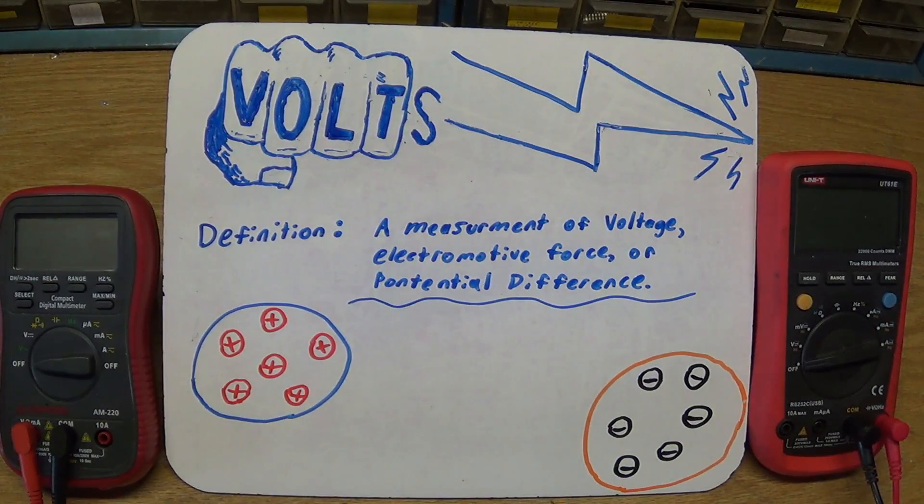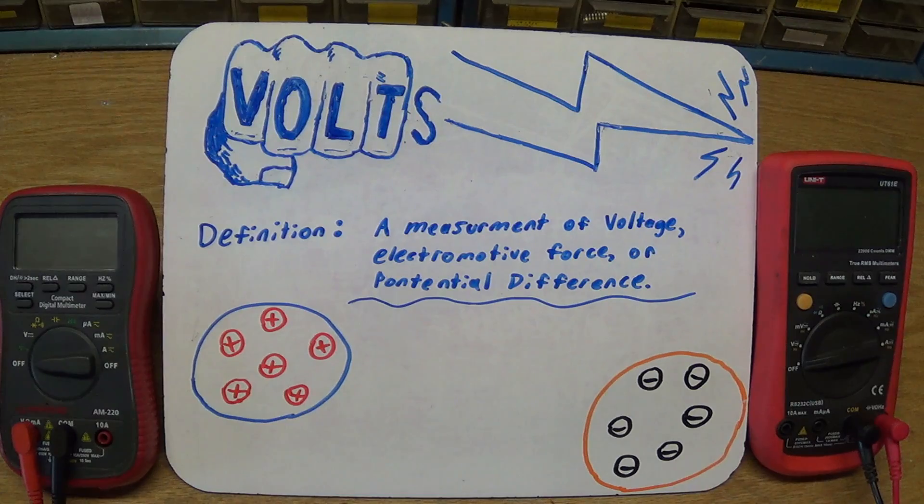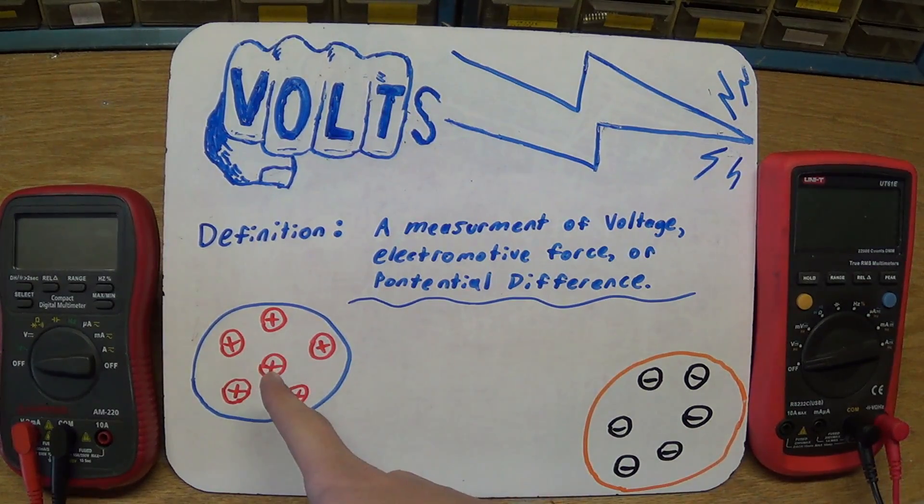Let's start with volts. So what are they? Well, a volt is just a measurement of voltage, electromotive force, or just potential difference. That isn't a very helpful definition. So here I've drawn two blobs, and inside them you can see that they have charges. Here we have a net negative charge, and here we've got a net positive charge.